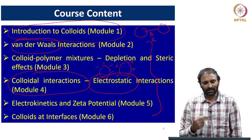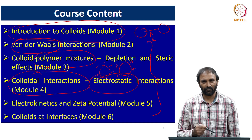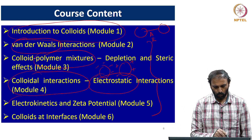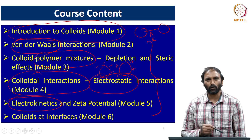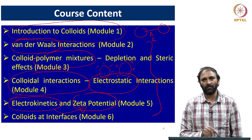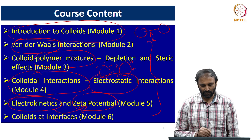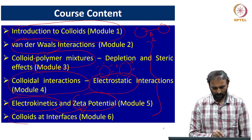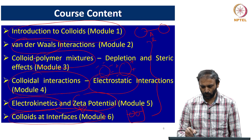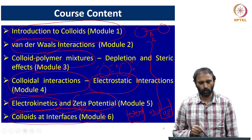You can induce interactions by the addition of external species, for example polymers, and we will look at how the addition of such external species brings about new types of interactions. We will also have a module devoted to electrokinetics, which is exploited in the measurement of a parameter called zeta potential, which can be used to discuss the stability of colloidal systems. Finally, we will end the course with module 6, in which we will look at colloids sitting at an interface of two fluids, versus the colloids sitting in the bulk which are discussed in modules 1 to 5.